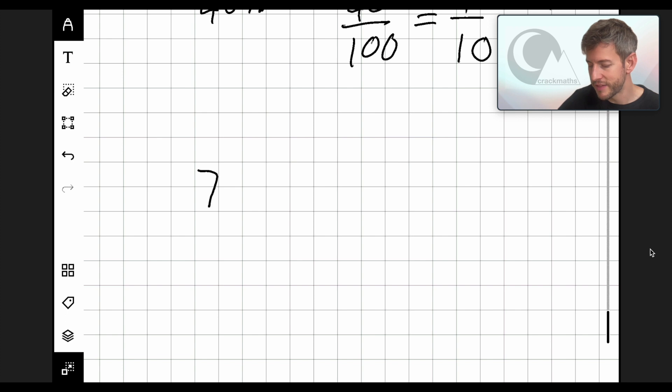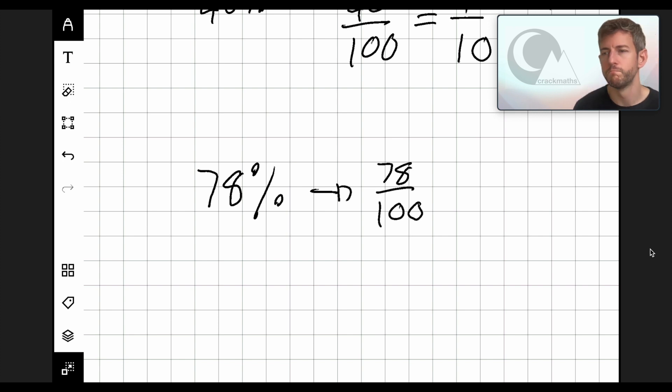Let's this time take 78%. So 78% is going to be 78 over 100. Now, it's a little bit tricky to divide these. But as 78 ends in an 8, I know it's an even number. And I know that 100 is an even number as well. So it's quite possible that we're going to be able to half both the top and the bottom. So 100 divided by 2 is 50. And 78 divided by 2 is going to be 39.